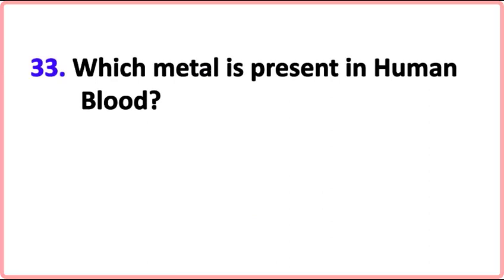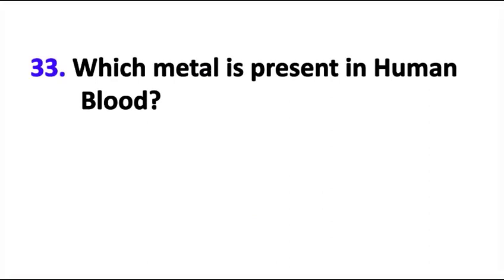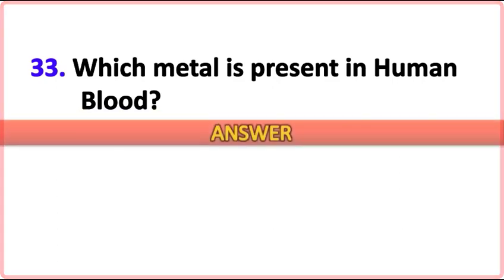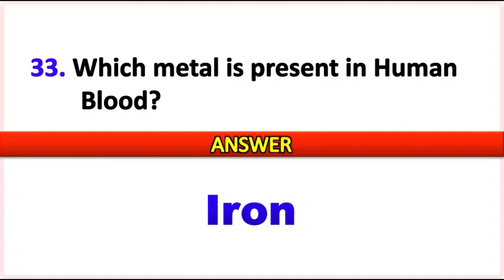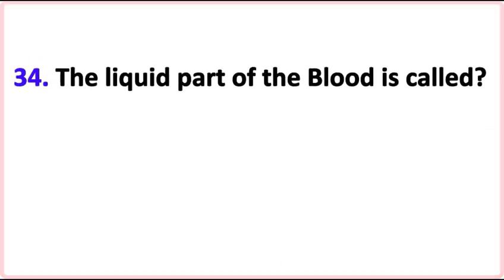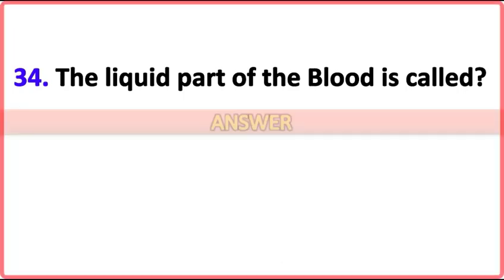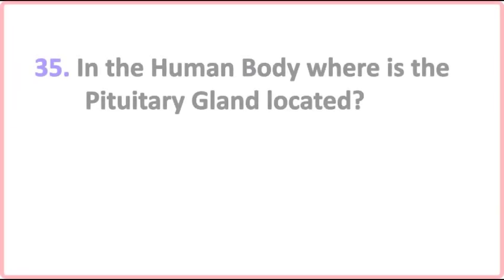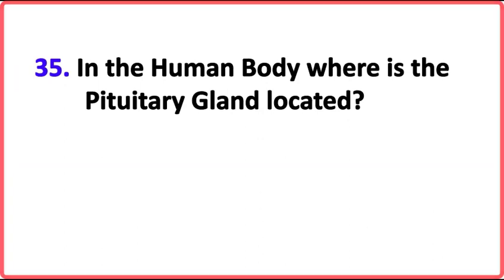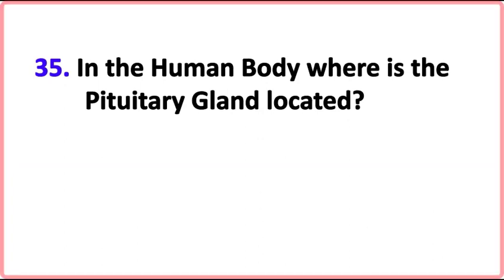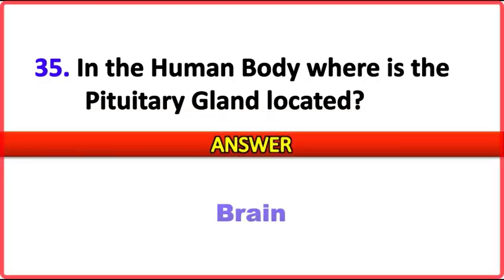Which metal is present in human blood? Answer: Iron. The liquid part of the blood is called? Answer: Plasma. In the human body, where is the pituitary gland located? Answer: Brain.